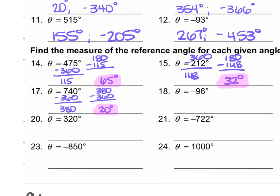For number 18, we have negative 96 degrees. We're going to take 180 and subtract 96 from it. When we do that, we get 84 degrees. So that's our answer.